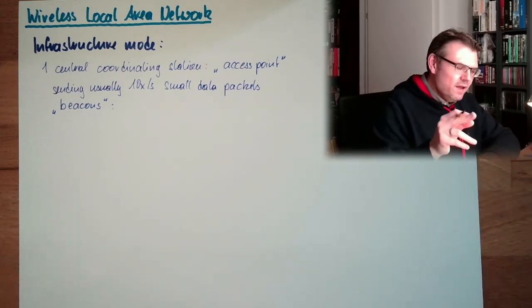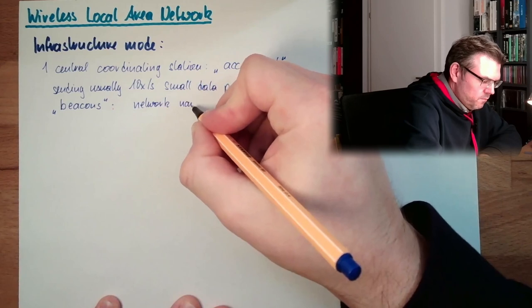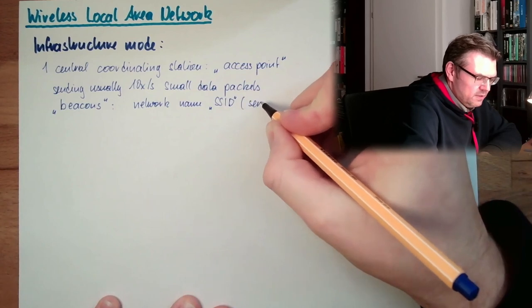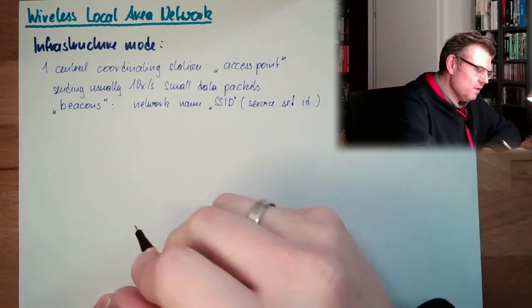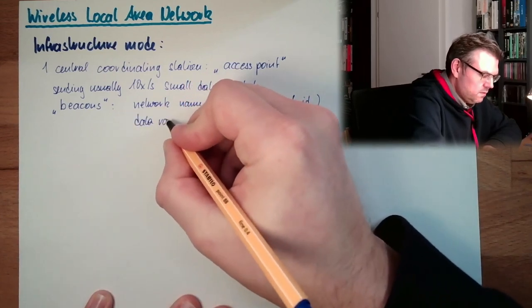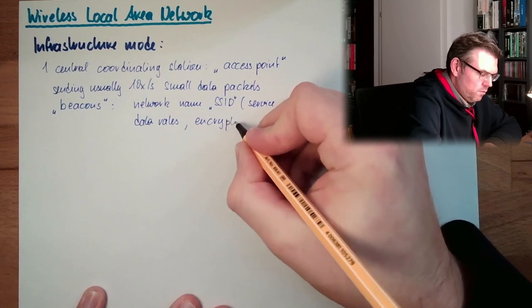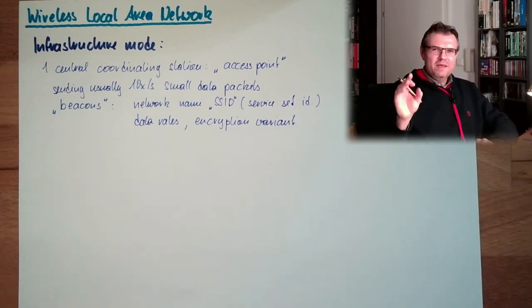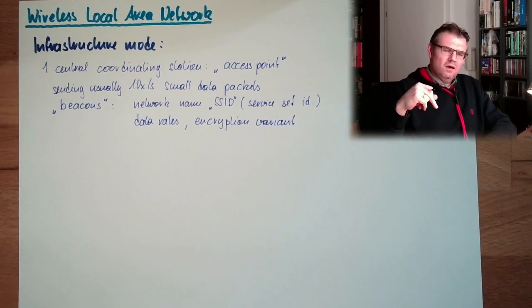These beacons contain data. What is contained is the network name, the so-called SSID, which means service set identifier. Then the data rates, supported data rates, and the encryption variant of the network. Beacons are always referred with the lowest possible data rate.